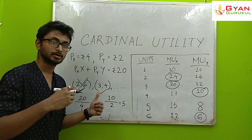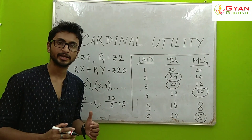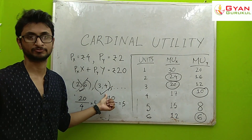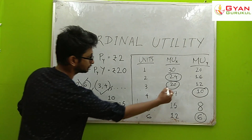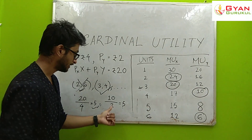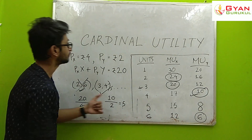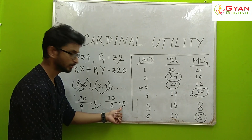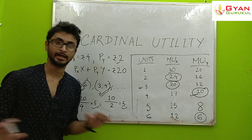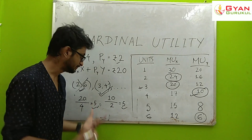So this is the Cardinal Utility equilibrium condition. The equilibrium condition is: Marginal Utility of X divided by Price of X equals Marginal Utility of Y divided by Price of Y. In our example, MUx = 20, Price of X = 4, so MUx/Px = 5. And MUy = 10, Price of Y = 2, so MUy/Py = 5. The condition is satisfied.